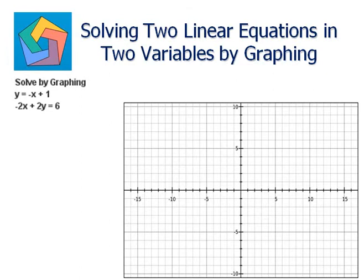Now we need to graph them, so I'll use the x-intercept and y-intercept to graph these lines. The x-intercept is the point which we get by putting y as 0 in the equation, and the y-intercept is the point which we get by putting x as 0 in the equation. So I have y is equal to negative x plus 1.